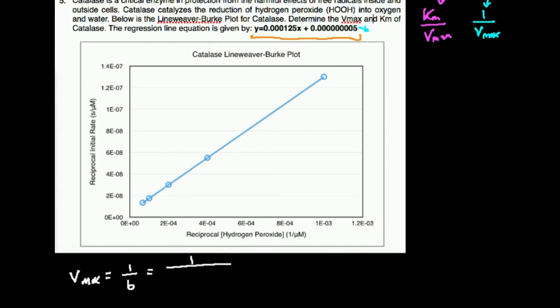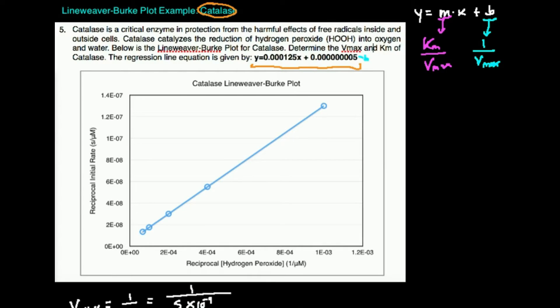Our y-intercept is 5 times 10 to the minus 9th. The units of the y-intercept are the same units as the y-axis, which is seconds per micromolar. Whatever the units are on the Lineweaver-Burk plot y-axis, those are the units of the y-intercept. So this is going to be seconds per micromolar.